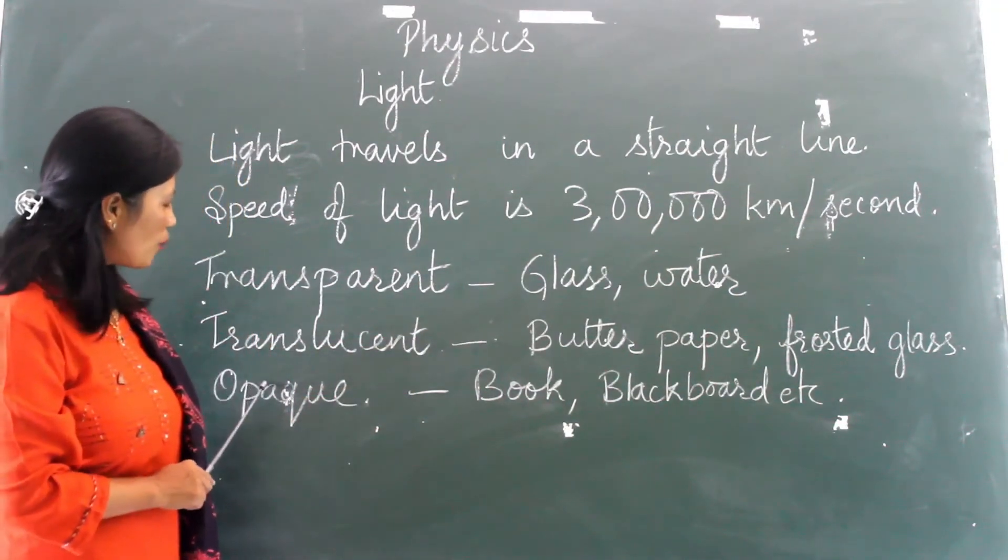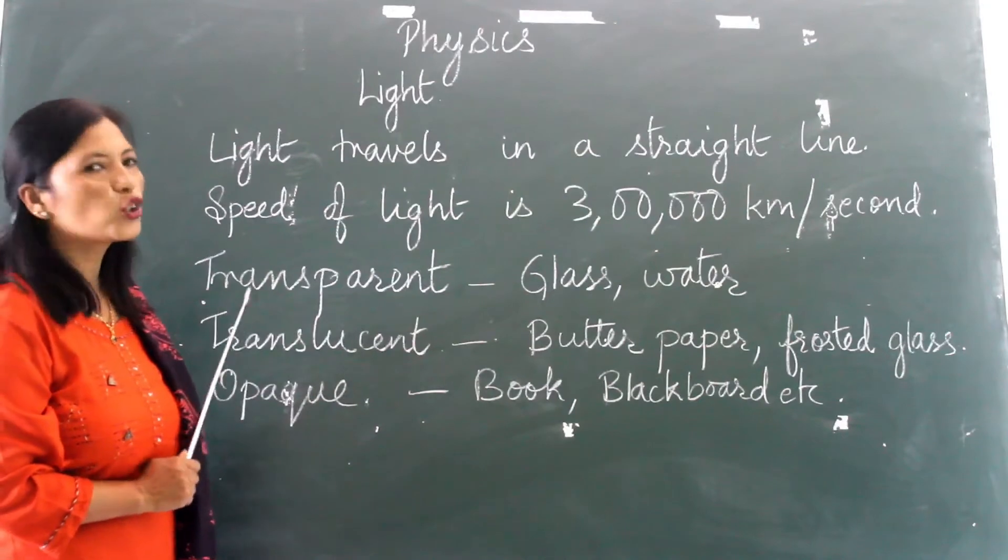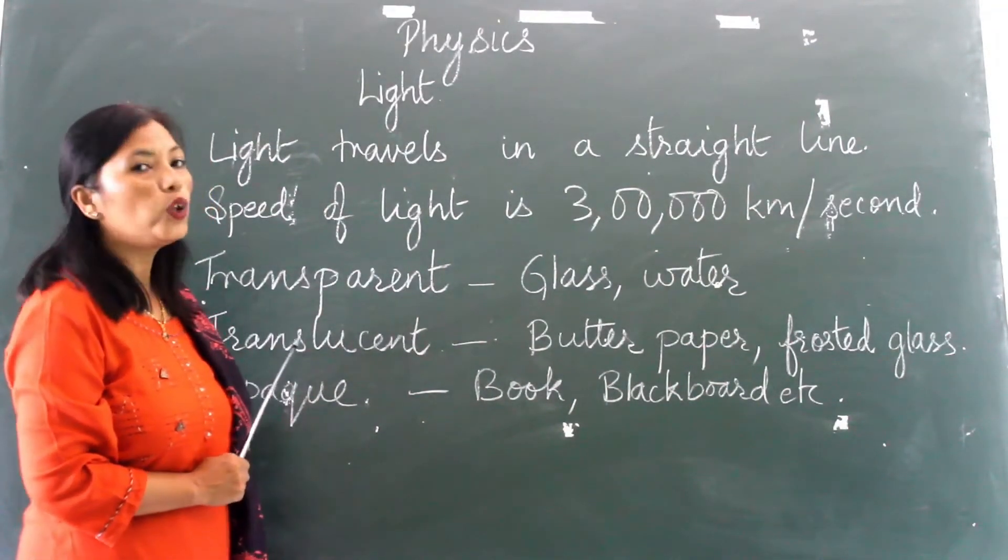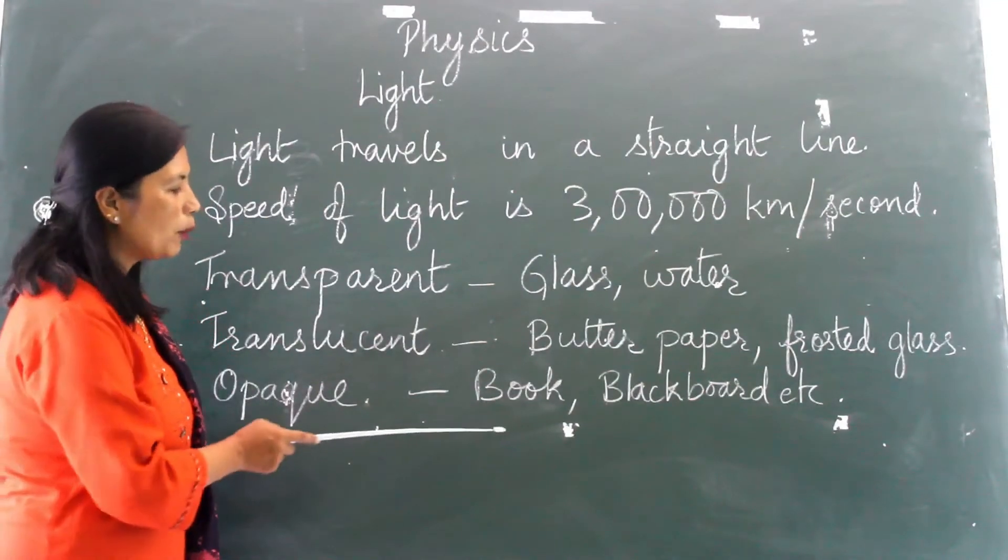And opaque objects or opaque materials are those which do not allow light to pass through them, and we cannot see through them. For example, book, blackboard, etc.